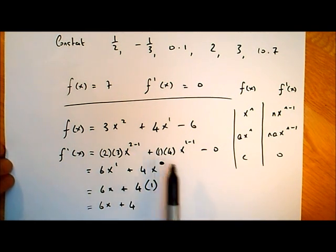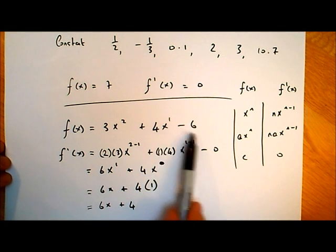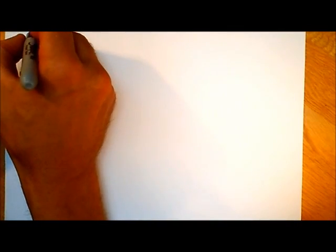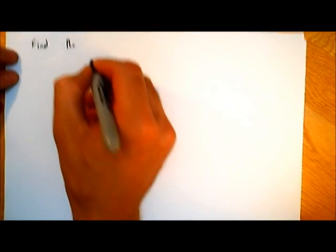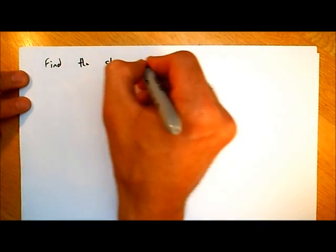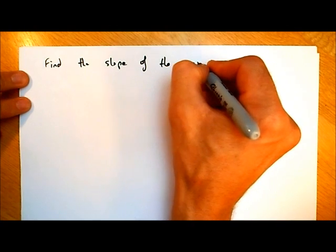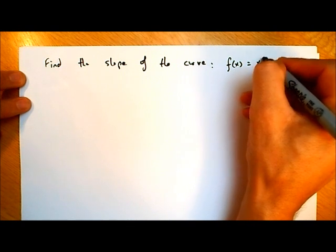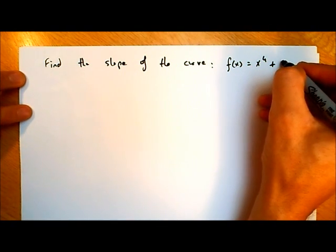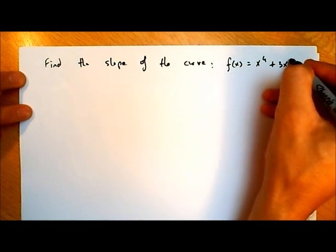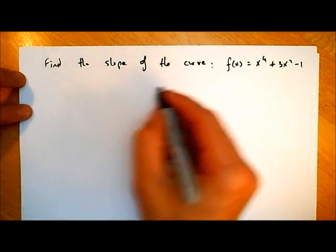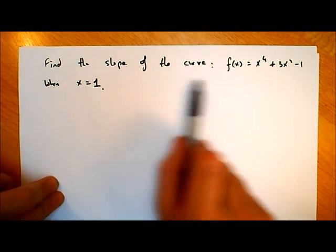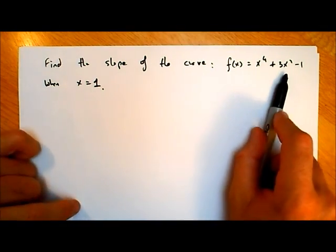So when we differentiate 3x squared plus 4x minus 6, we get 6x plus 4. Let's do one more example: find the slope of the curve f of x equal to x to the power of 4 plus 3x squared minus 1.